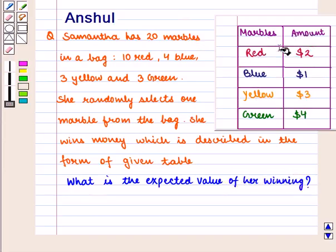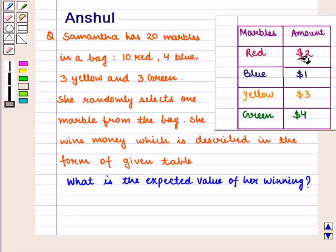In this table, we have two columns: one for marble color and the second for the amount won. If she selects a red marble, she gets $2. For a blue marble, she gets $1. For a yellow marble, she gets $3. And for a green marble, she gets $4.